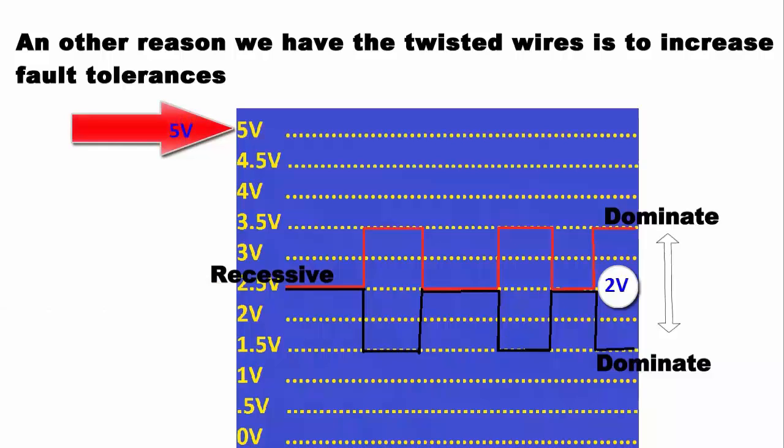except that now we have two wires sharing the 5 volt recessive command.